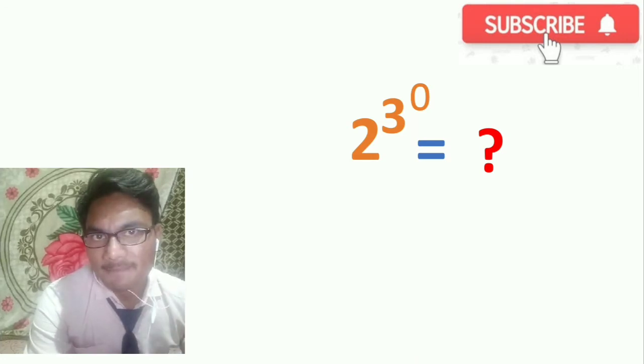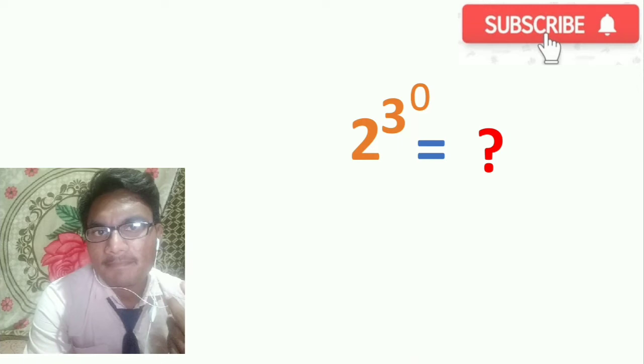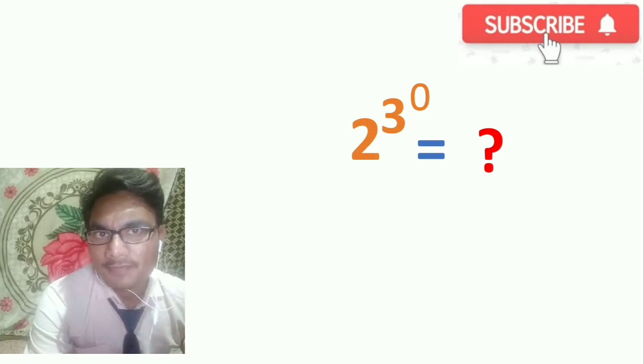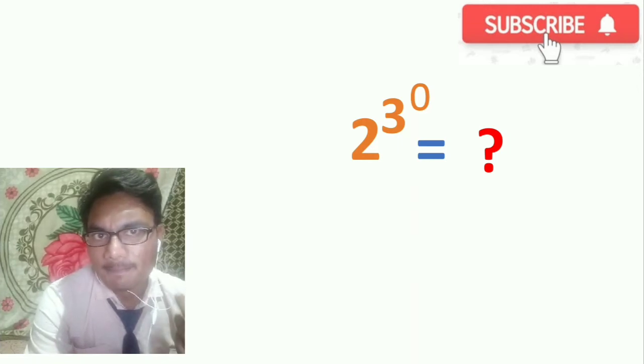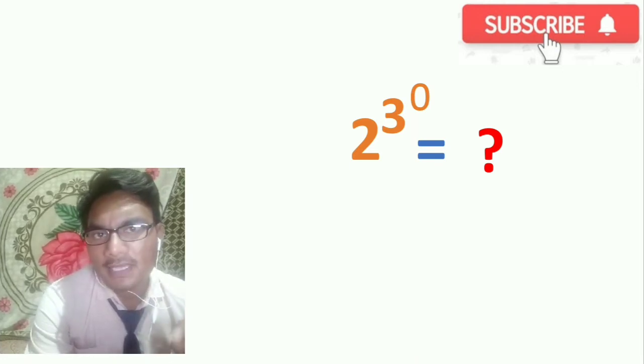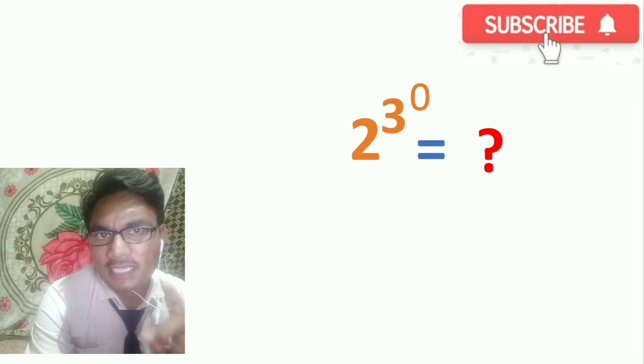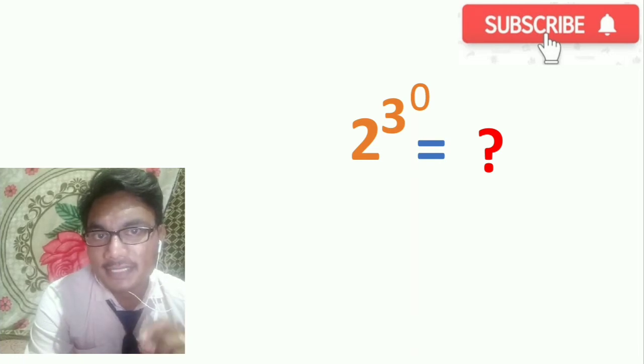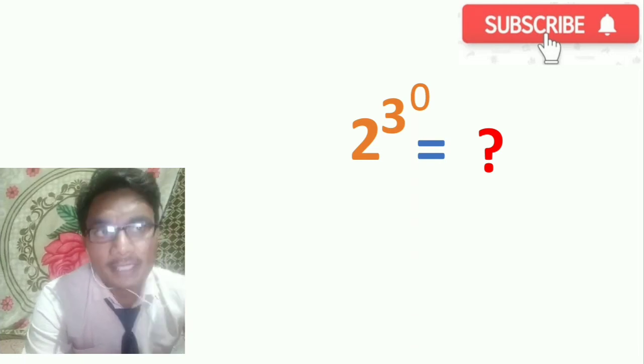This is power of power, so we have 3 raised to 0. This uses the property of indices. The property says: a raised to 0, what happens?